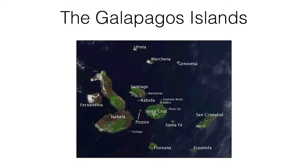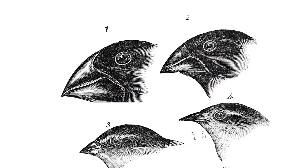Darwin also traveled. He went to the Galapagos Islands, famously, and there he observed variation within species, differences between species, and adaptation to different ecological habitats. One of his most famous organisms were the finches — birds on the Galapagos. He identified all sorts of different morphological characteristics: the beak shape, the body size. He wanted to understand how this variation came about.